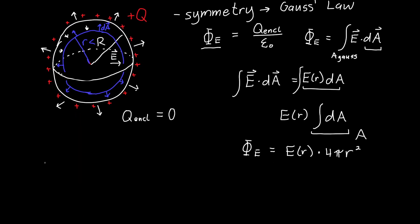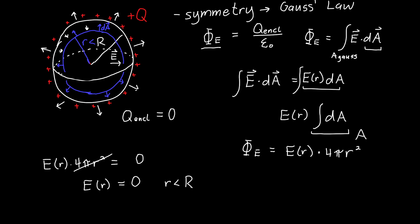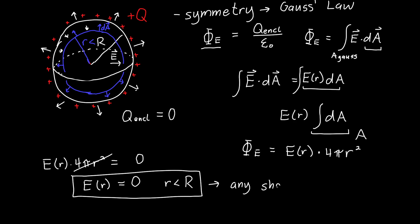We can now set the two sides equal: E(r) times 4πr² equals the charge enclosed over epsilon naught, which is zero. Dividing both sides by 4πr², we get E(r) = 0 inside the sphere, for little r less than big R. This is really interesting — there is no electric field inside the conductor. This generalizes to any shape of conductor: the electric field is always zero inside any conductor, which is exactly why all charge ends up on the surface.